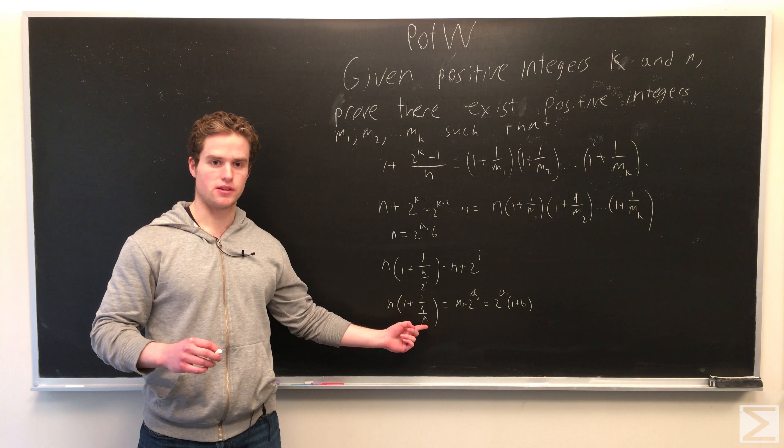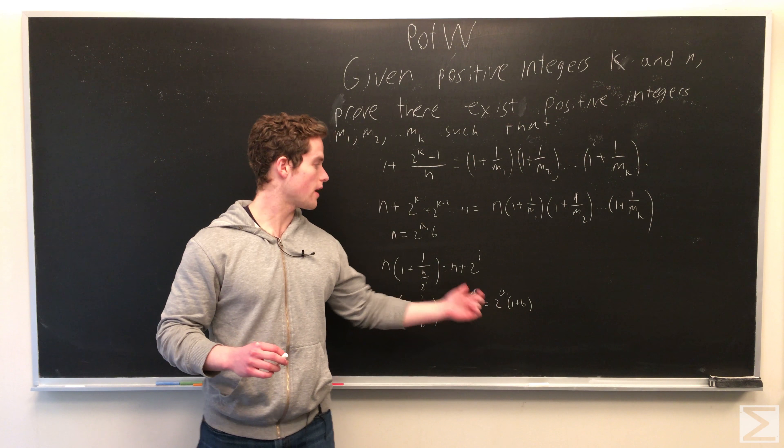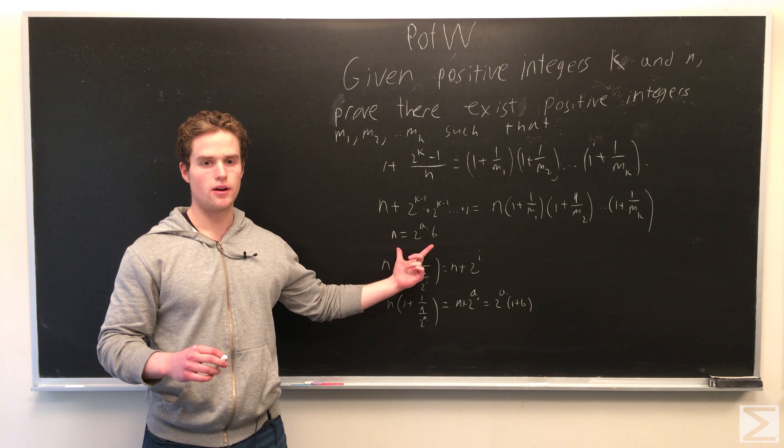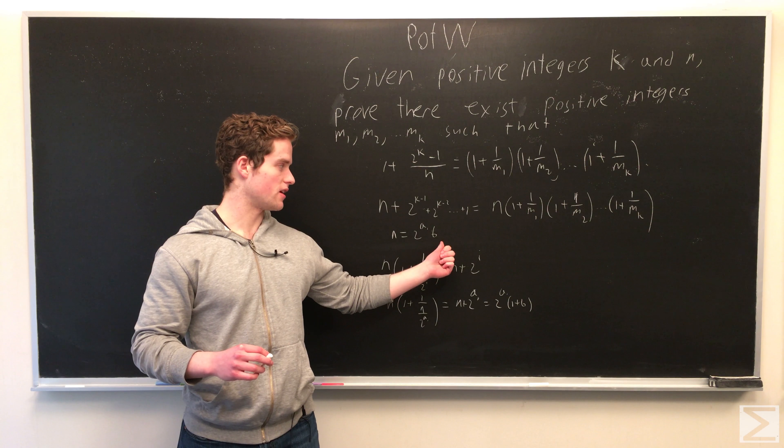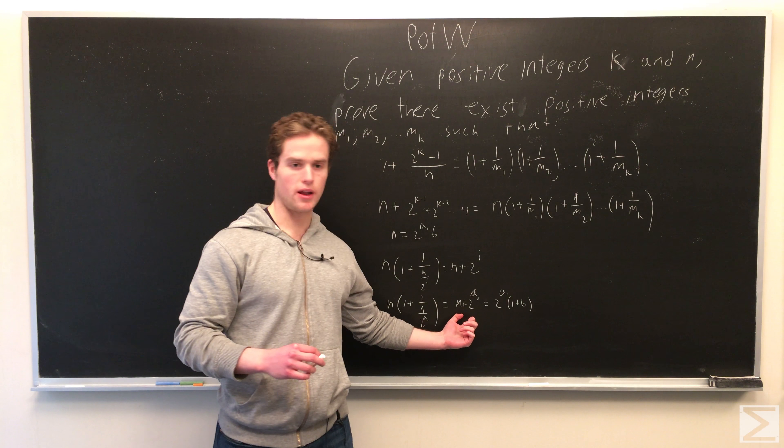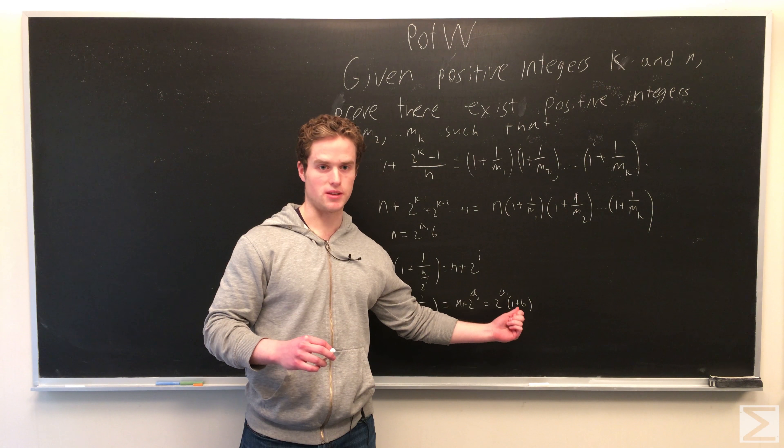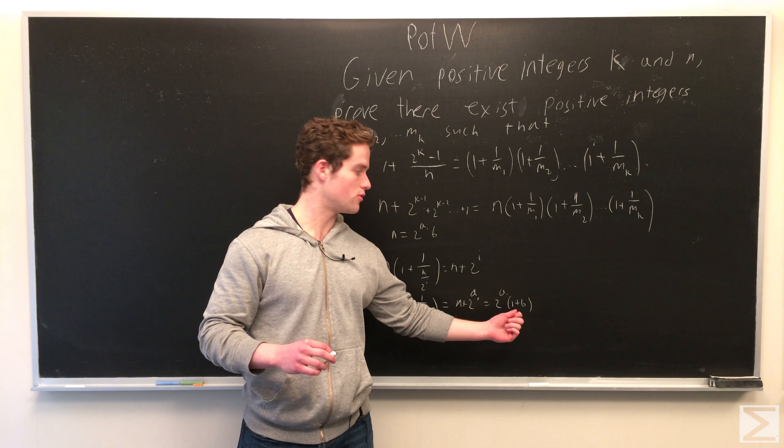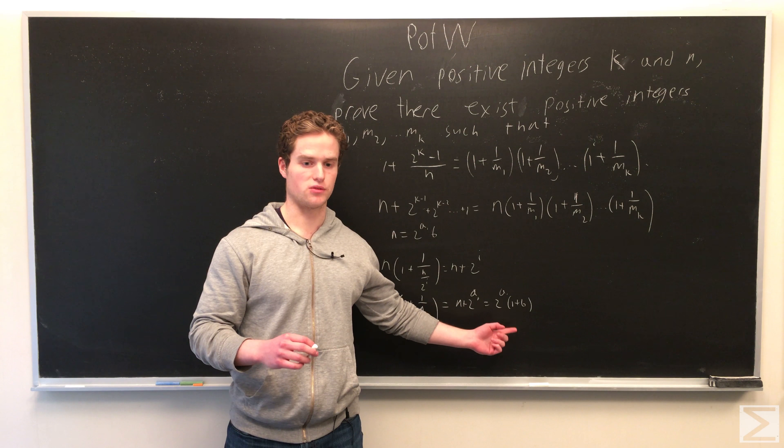So if we say i equals a1, note this will give us n plus 2 to the a1. And in our initial case, when we say n equals 2 to the a1 times b, we're assuming b is odd, so all the factors of 2 are out in front. So n plus 2 to the a1 gives us 2 to the a1 times 1 plus b. So 1 plus b is even, so that's divisible by at least 1 power of 2. So this is divisible by at least 2 to the a1 plus 1.